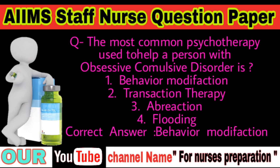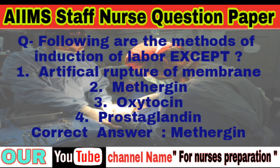Question: The most common psychotherapy used to help a person with obsessive compulsive disorder is — behavior modification, transaction therapy, abreaction, or flooding. Correct answer is behavior modification. Question: Which of the following is NOT a method of induction of labor? Options: Artificial rupture of membrane, Methergin, Oxytocin, Prostaglandins. Correct answer is Methergin.